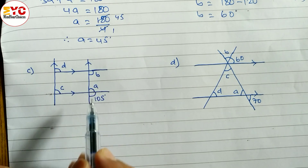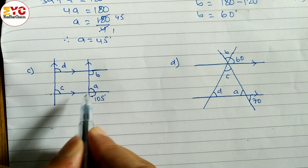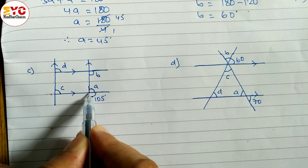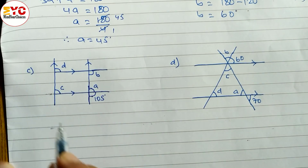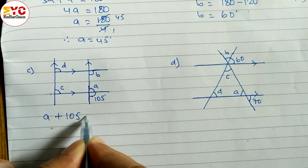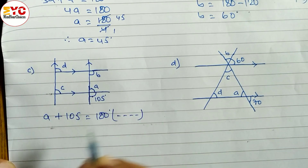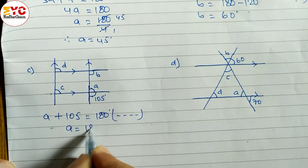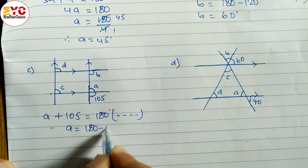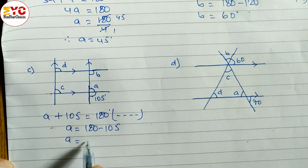Now, how to find out value of a? We can write a plus 105 is equal to 180 degrees, because this one is a straight line. So we can write a plus 105 is equal to 180 degrees, being supplementary angle. So a is equal to 180 minus 105. Therefore the value of a is equal to 75 degrees.